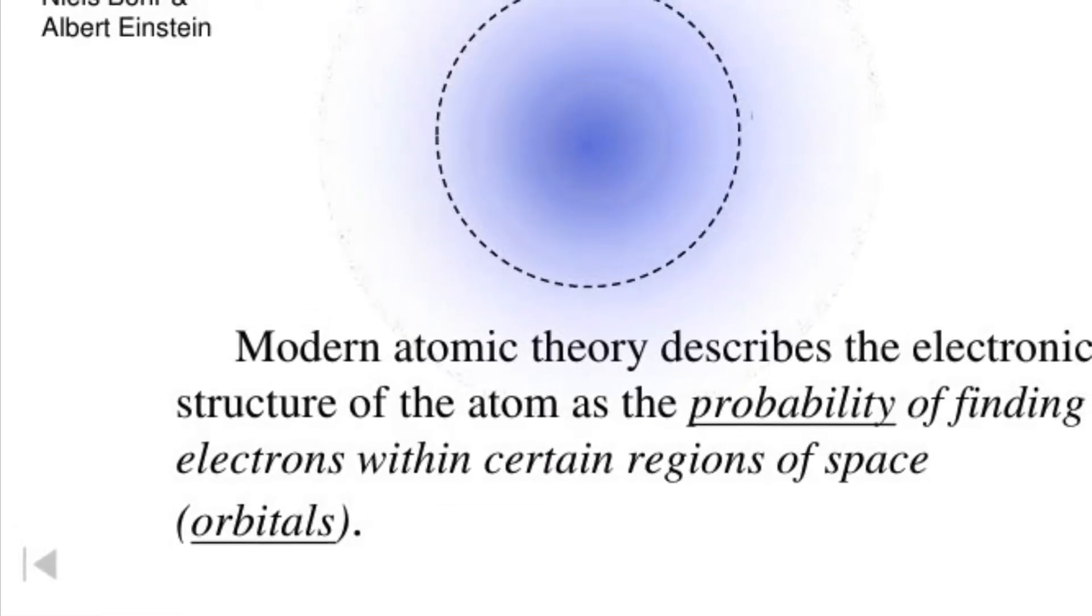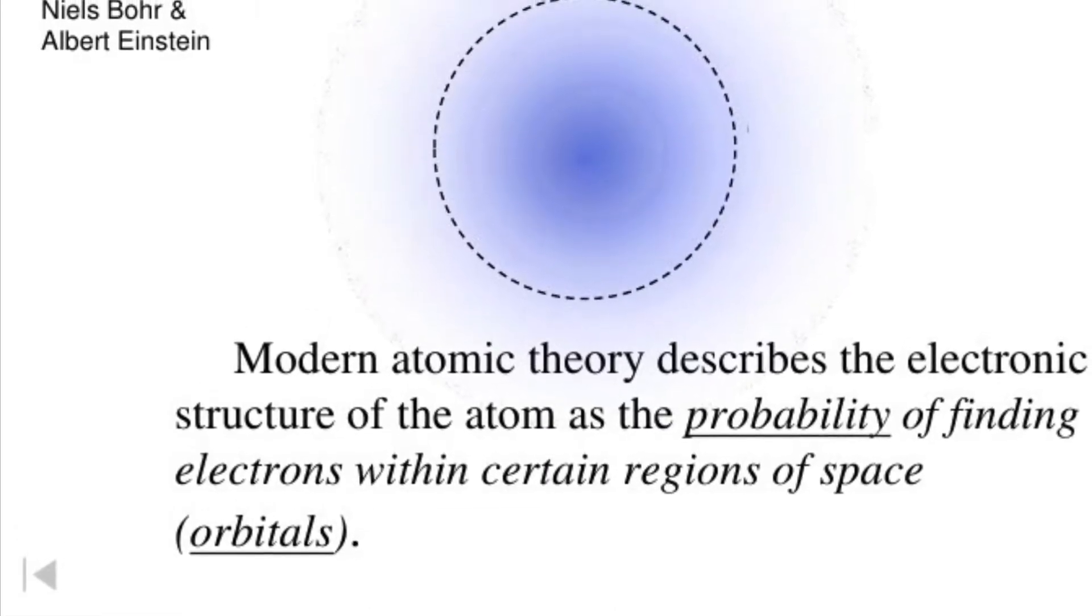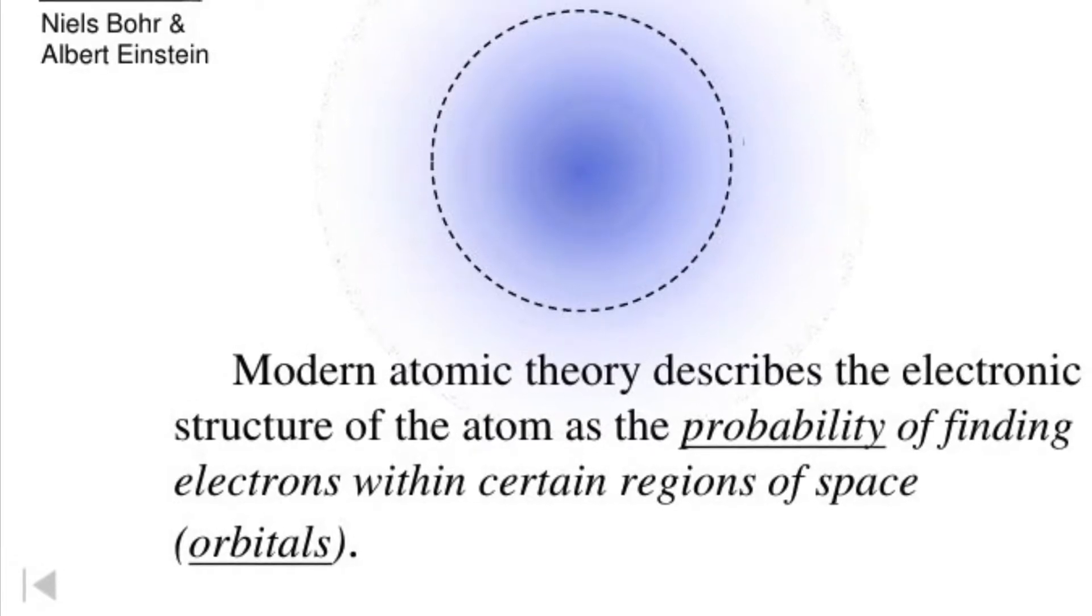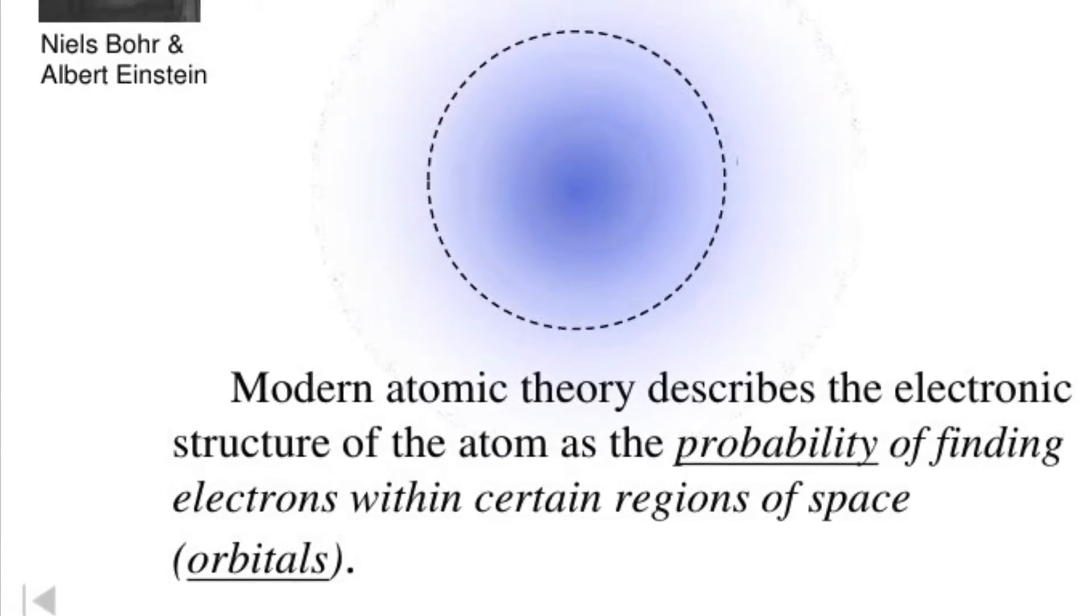Quantum theory describes matter acting as both a particle and as a wave. This relates to atoms as electrons and atoms behave like waves.